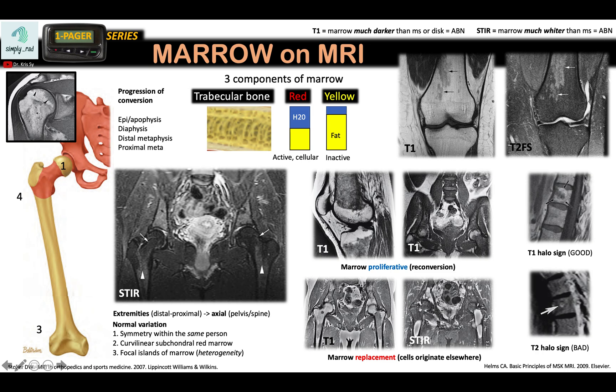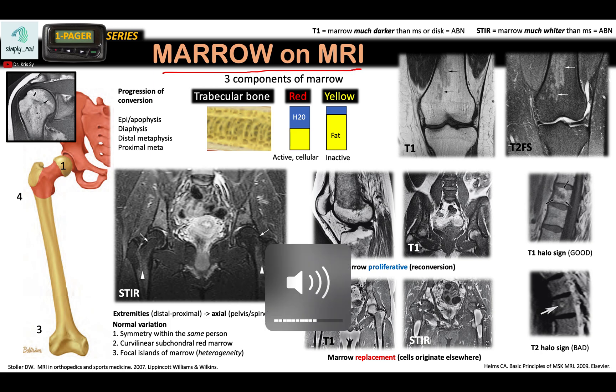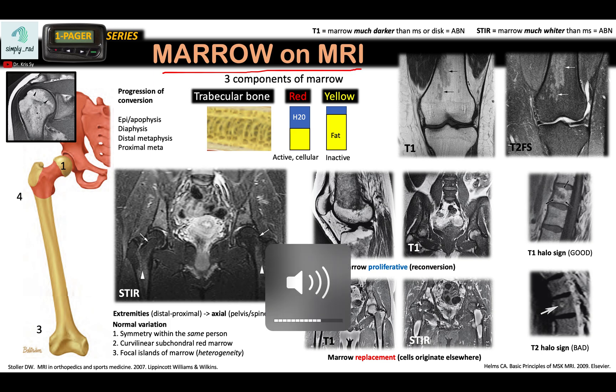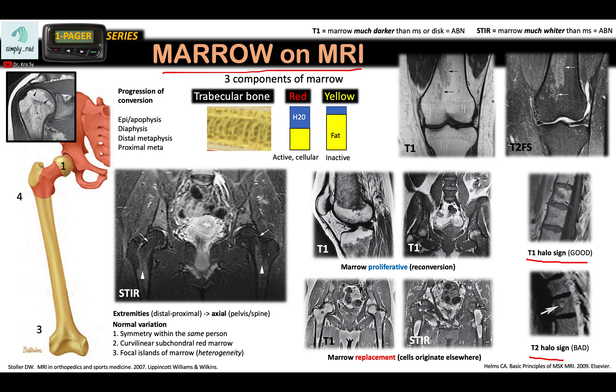To continue our talk about marrow on MRI, we're going to examine the T1 halo sign and the T2 halo sign.